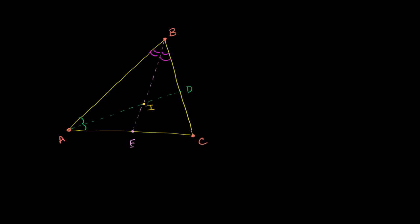It's a useful letter based on what we're going to call this in very short order. There are some interesting things we know about I. I sits on both of these angle bisectors. We saw in the previous video that any point that sits on an angle bisector is equidistant from the two sides of that angle. So I sits on AD, meaning it's equidistant from the two sides of angle BAC. The shortest distance is the perpendicular distance, which is why I drew perpendiculars right over there.